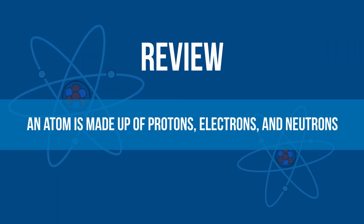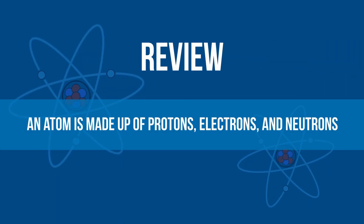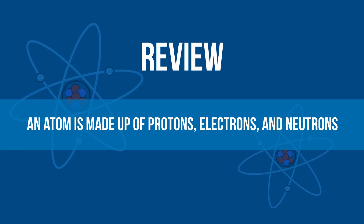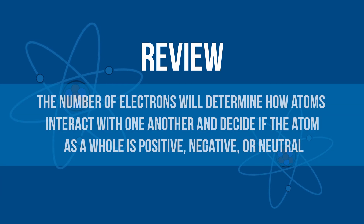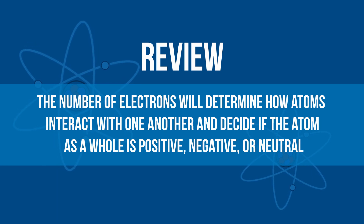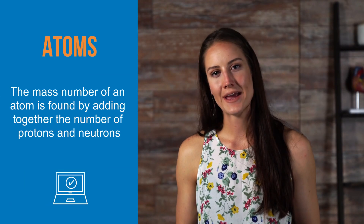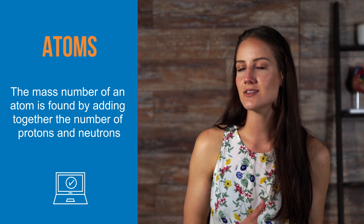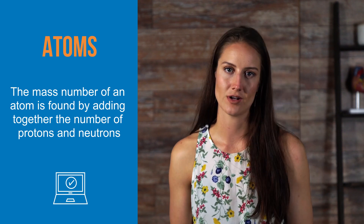Here's a quick review. An atom is made up of protons, electrons, and neutrons. The number of electrons will determine how atoms interact with one another and decide if the atom as a whole is positive, negative, or neutral. The mass number of an atom is found by adding together the number of protons and neutrons.